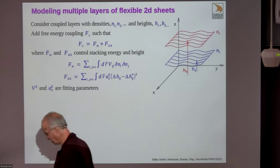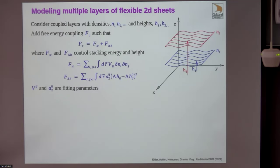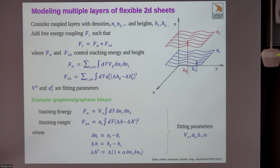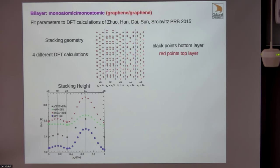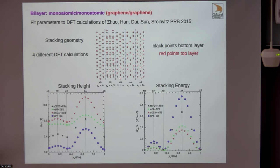The next thing is coupled sheets. Experimentally, people have been studying coupled sheets because they have very interesting electronic properties. The idea is to add coupling between two sheets—coupling the densities and coupling the heights so they want to be a certain distance apart depending on the stacking. For the simplest graphene-graphene case, we have the density of each sheet, the heights H₁ and H₂, and we fit these parameters to density functional calculations. A paper used four different DFT methods to calculate the energy of different stacking states.